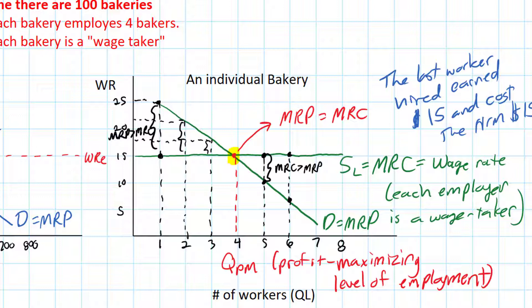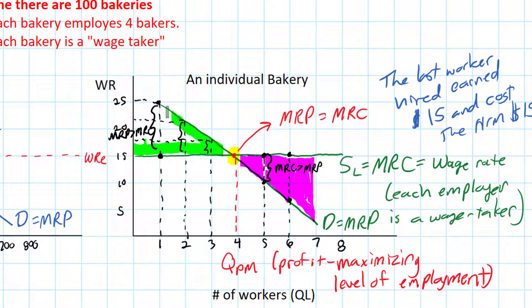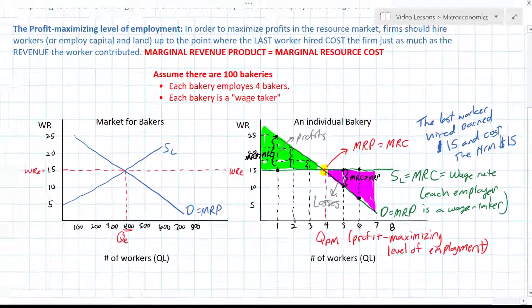If the benefit of doing something outweighs the cost, an individual should do that thing. Firms should hire workers as long as the revenue earned by the last worker hired exceeds the cost of hiring that worker. Beyond four workers, there would be losses on the margin as the cost of hiring exceeds the benefit — shown as purple areas in the diagram. The green area represents the profits firms earn as they hire workers up to the fourth, while the purple represents losses if they hired beyond the fourth worker.